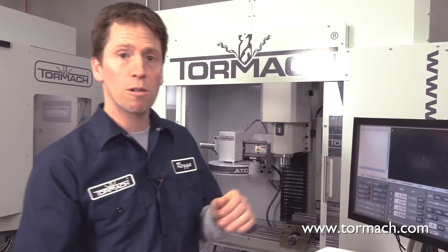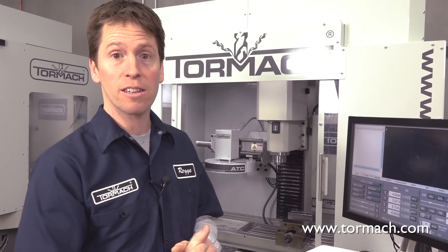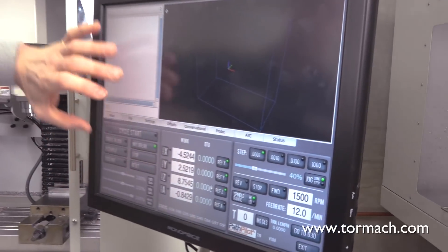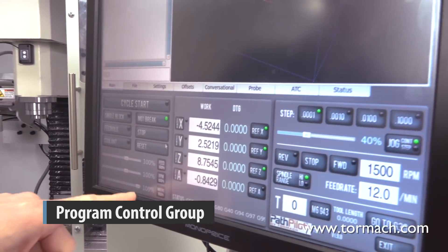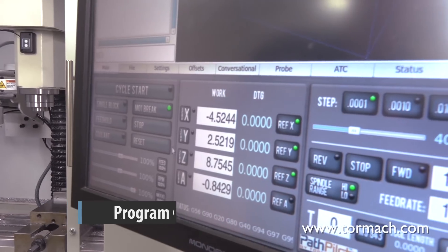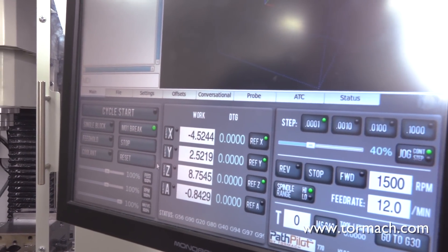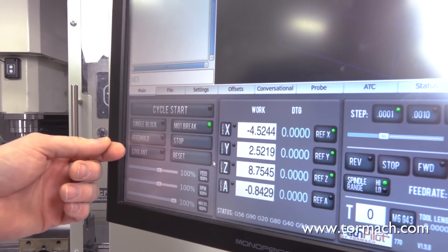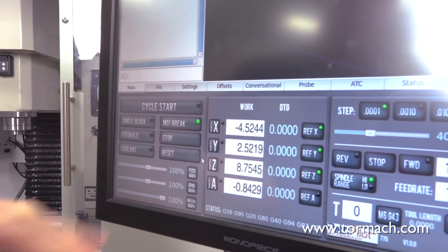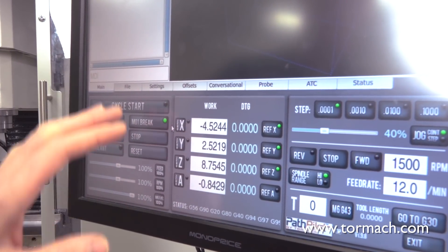I'm going to give you a quick tour of some of the highlights of the interface that you'll need to get started here. This third of the screen here, with the cycle start button at the top, all the way down through the overrides, these are all controls that you'd use while running a G-code program. Cycle start will start a G-code program. Single block will allow you to step through one line of code at a time. The rest of these buttons are all documented in the manual. But this is stuff that you're going to use while running a program.